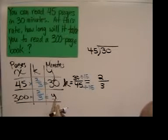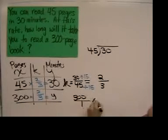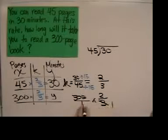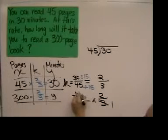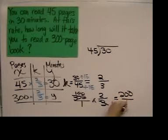So to get our mystery value here for minutes we're going to multiply 300 times 2 thirds. 3 and 300 can reduce. 3 divided by 3 is 1. 300 divided by 3 is 100. So the answer is 200 over 1.